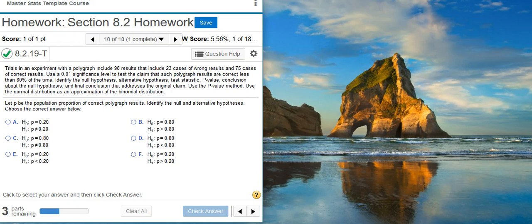Okay, the first part of our problem says let p be the population proportion of correct polygraph results. Identify the null and alternative hypotheses. Choose the correct answer below. To form our null and alternative hypotheses, we need to go back to our problem statement and look for the claim. The first step is to identify the claim. Here we find in our problem statement the claim is that polygraph results are correct less than 80% of the time. So that means our proportion is going to be less than 80% of the time. That's the claim.